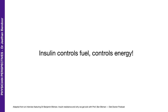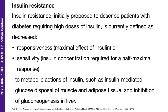Insulin is super important. So let's define insulin resistance. Insulin resistance, initially proposed to describe patients with diabetes requiring high doses of insulin, is currently defined as decreased responsiveness or decreased sensitivity to metabolic actions of insulin, such as insulin-mediated glucose disposal of muscle and adipose tissue, and inhibition of gluconeogenesis in the liver. So you have three important characters here: muscle, adipose tissue, and the liver.